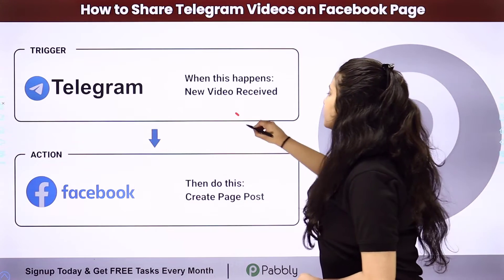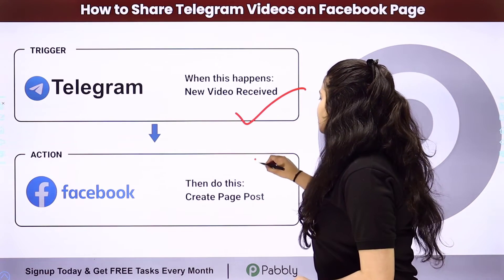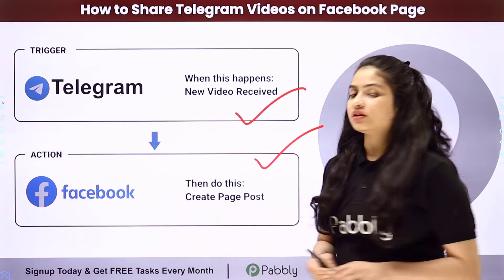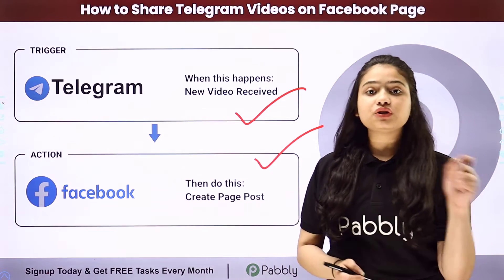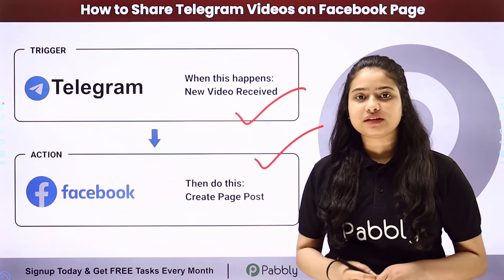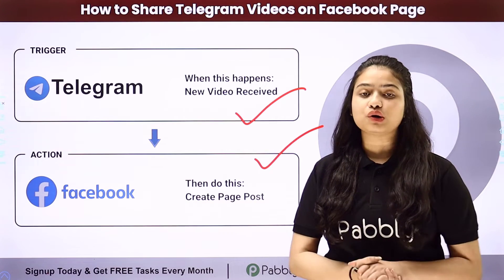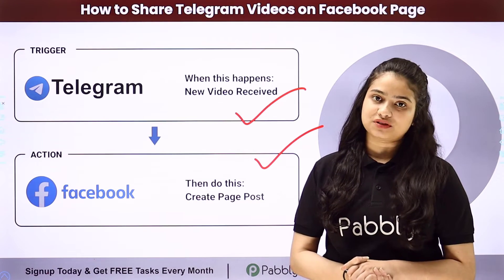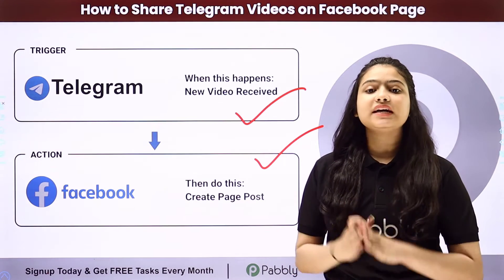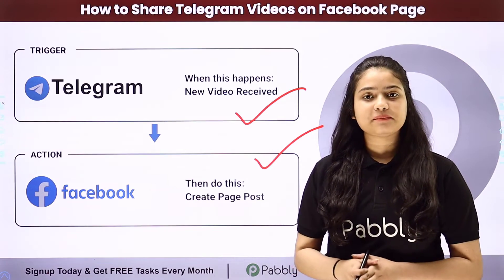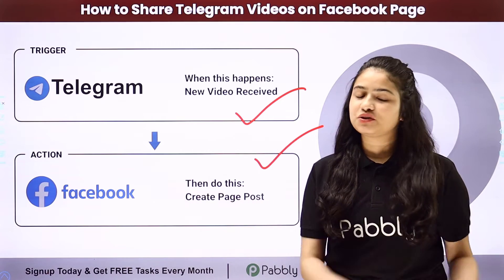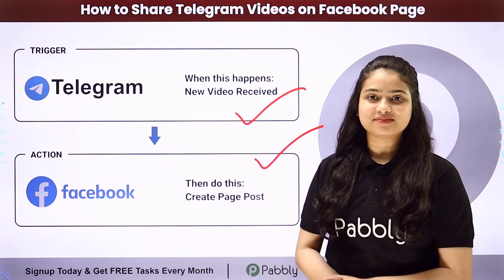We have Telegram in our trigger and Facebook Pages in our action. We will connect both of them by using Pably Connect in order to automate this entire process. To learn the entire automation step by step, let me take you all to my screen.